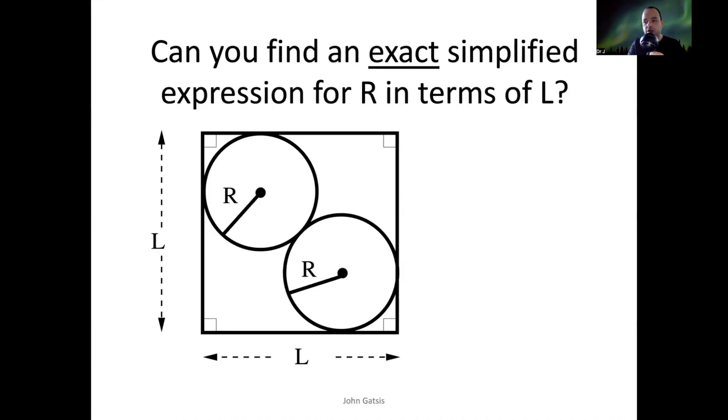All right, welcome back. We're looking here to solve the following problem. I'm going to try to do a bunch of these questions in this playlist, but in this example here, specifically, we're looking for the radius of two equal circles within a square whose dimensions are L by L. So let's find an expression for R in terms of L. And by an exact and simplified expression, I mean something that does not involve using a calculator. It may surprise you, but you only need to know the Pythagorean theorem and how to manipulate square roots to do this question.